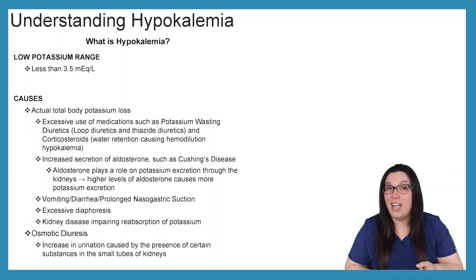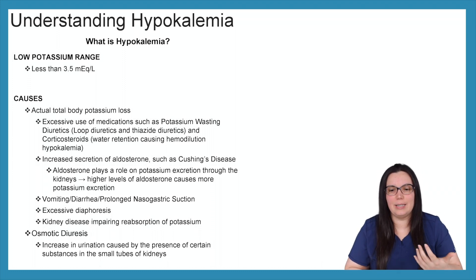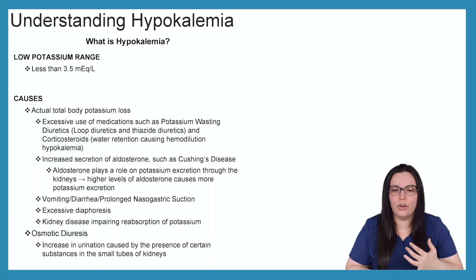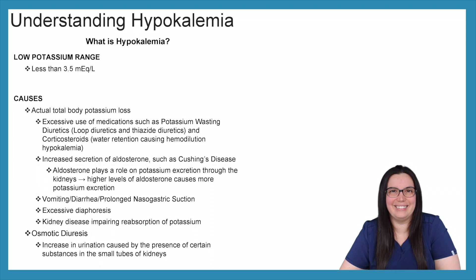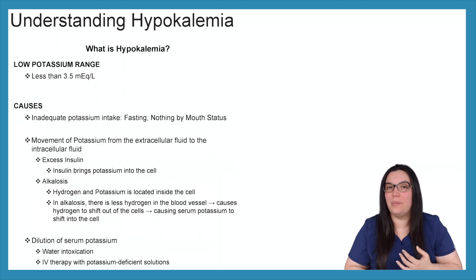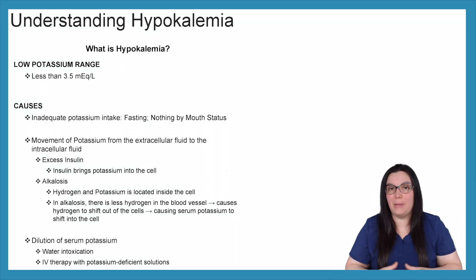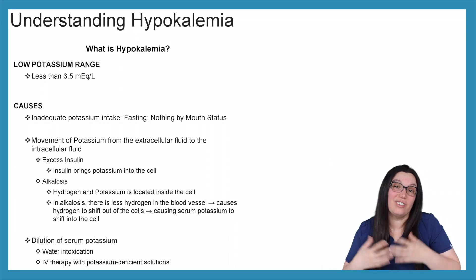Vomiting, diarrhea, and prolonged nasogastric suctioning can also cause hypokalemia. Excessive diuresis and kidney disease impairing reabsorption of potassium are contributing factors. Osmotic diuresis increases urine excretion of certain substances in the small tubes of the kidneys. Additional causes include inadequate potassium intake if the patient is fasting or is NPO status for a procedure or surgery. A movement of potassium from the extracellular fluid to the intracellular fluid is another mechanism.